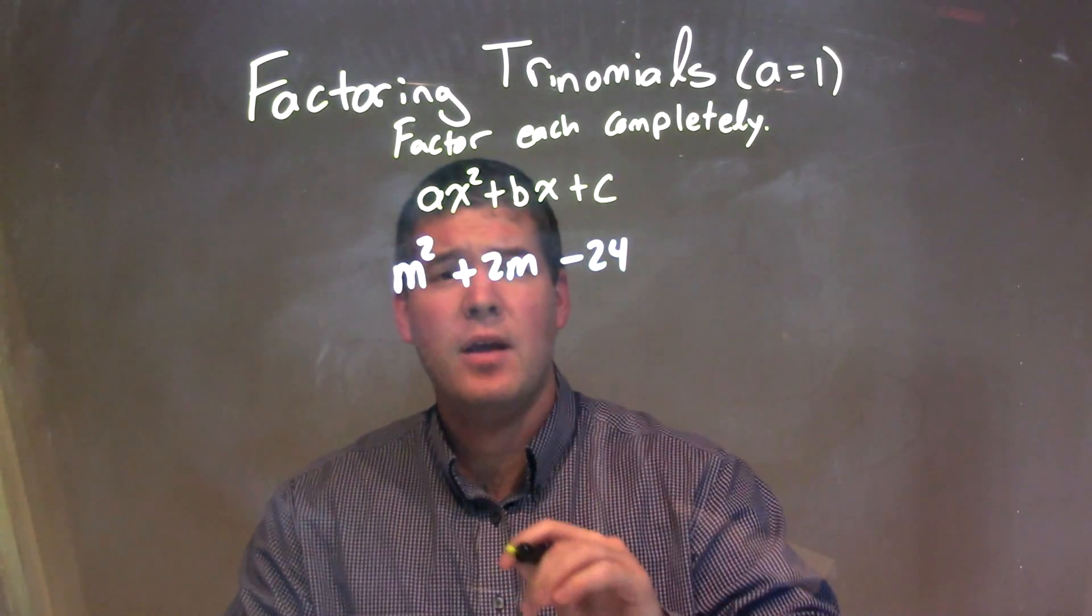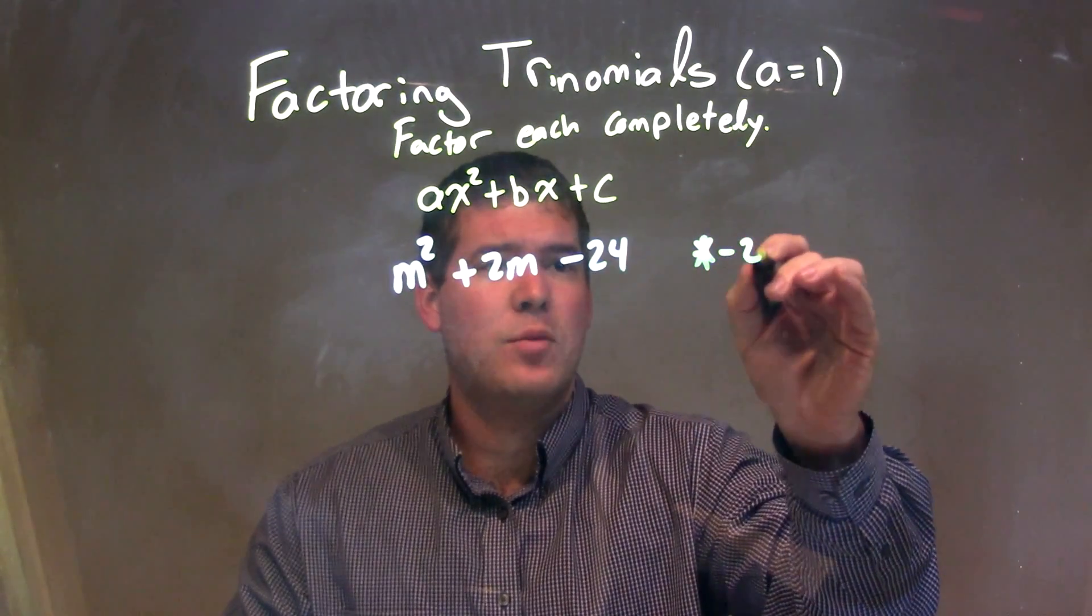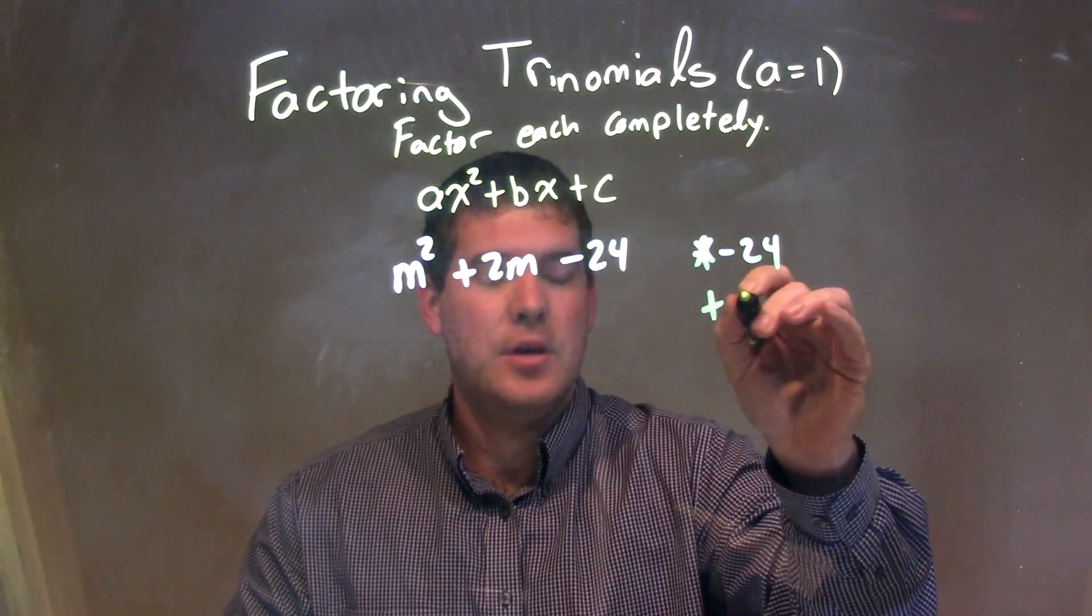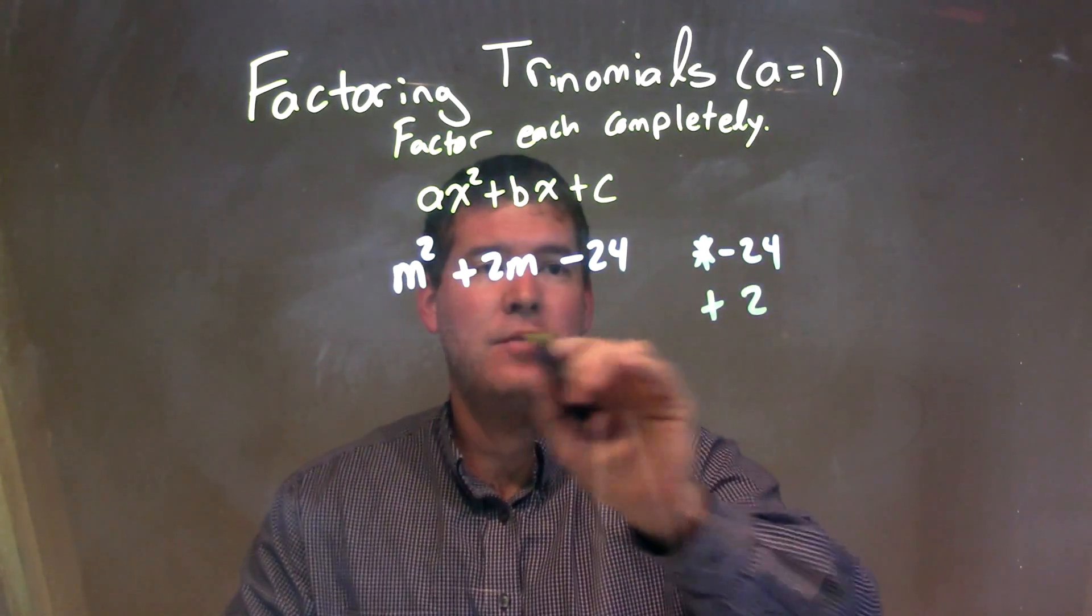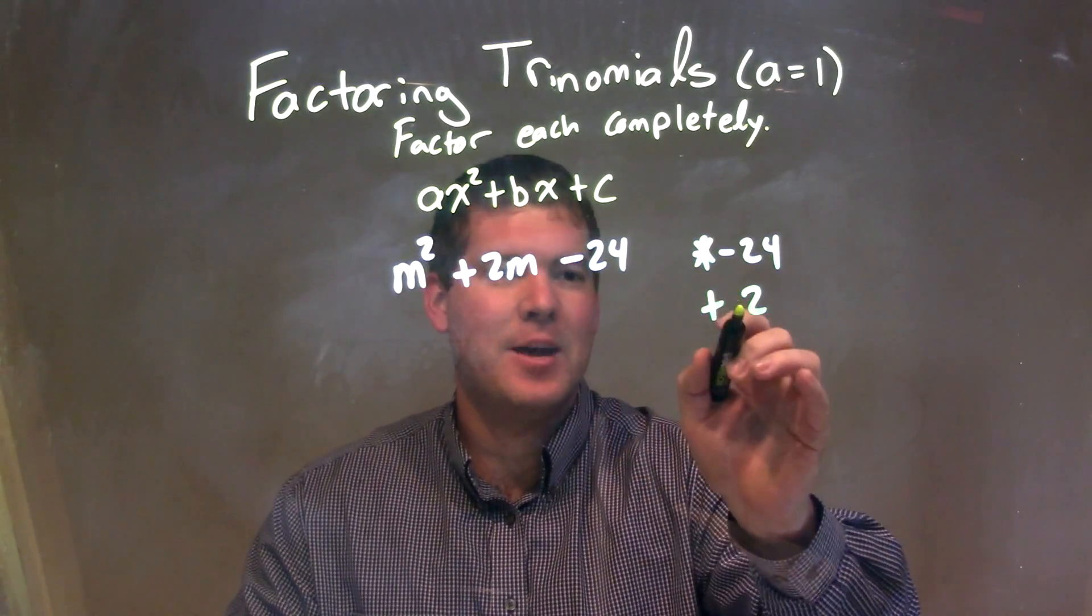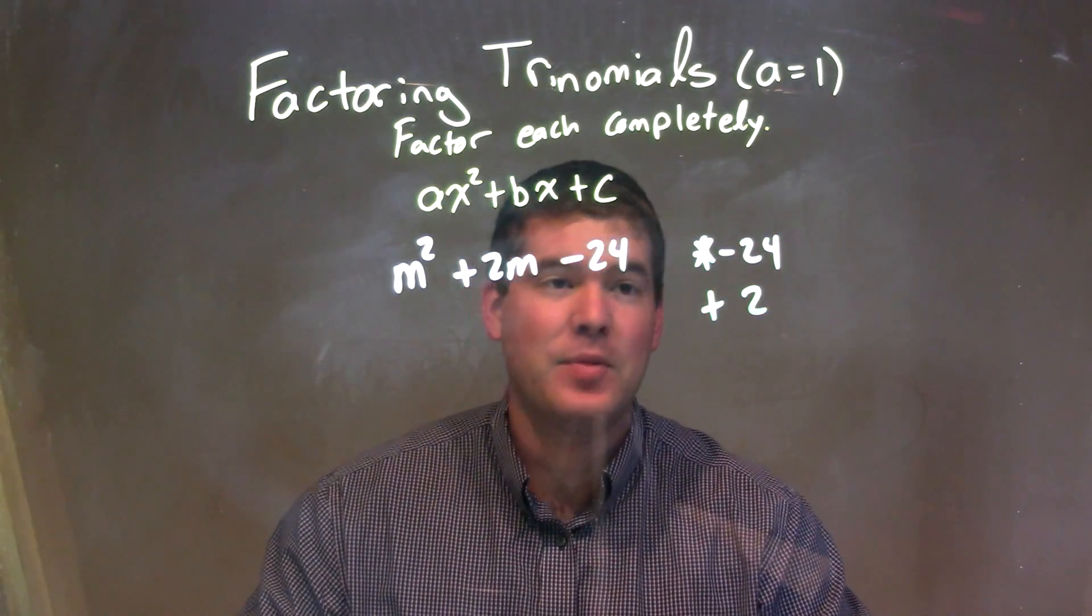What I'm going to ask myself here is what two numbers multiply to be my c value, which is negative 24. So what two numbers add to be 2, but multiply to be negative 24, my c value.